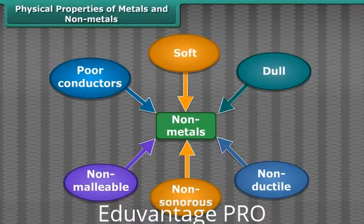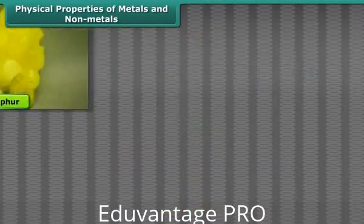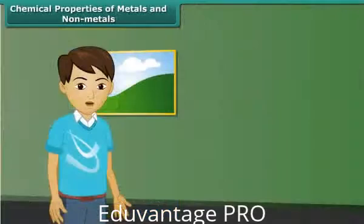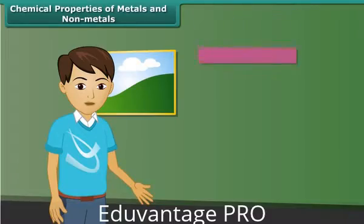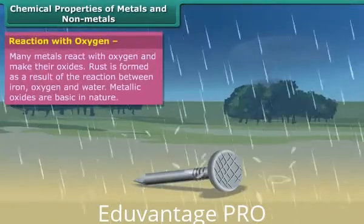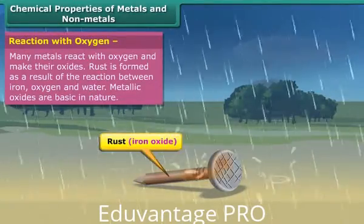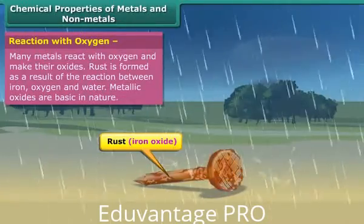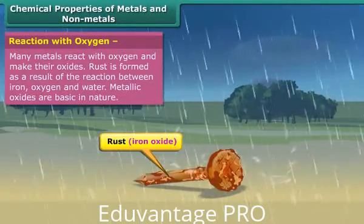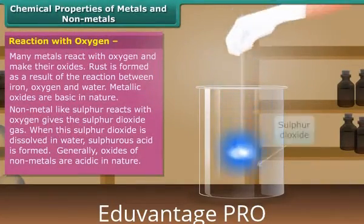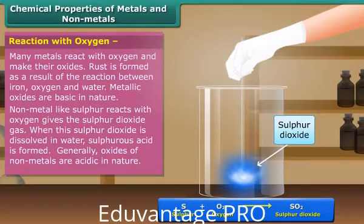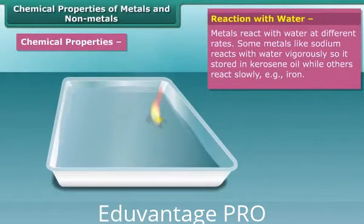Sulfur, carbon, and oxygen are examples of non-metals. After discussing physical properties, let's know about the chemical properties. Metals like iron, copper, magnesium, etc. react with oxygen and form their oxides. These oxides are basic in nature. Now for non-metals: sulfur reacts with oxygen, giving sulfur dioxide gas. Oxides of non-metals are acidic in nature.